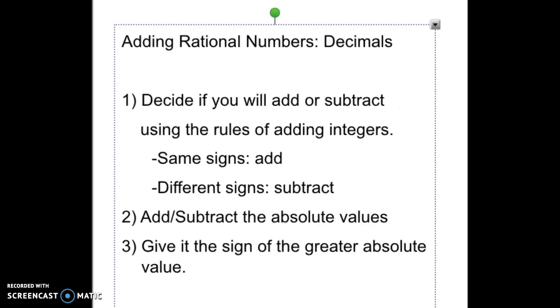So when you add rational numbers or decimals, the first thing you have to do is decide whether you will add or subtract using the rules for adding integers. It's the same exact rules. If the signs are the same, you'll be adding. If the signs are different, that means you're going to be subtracting. Add or subtract the absolute values and give it the sign of the greater absolute value.